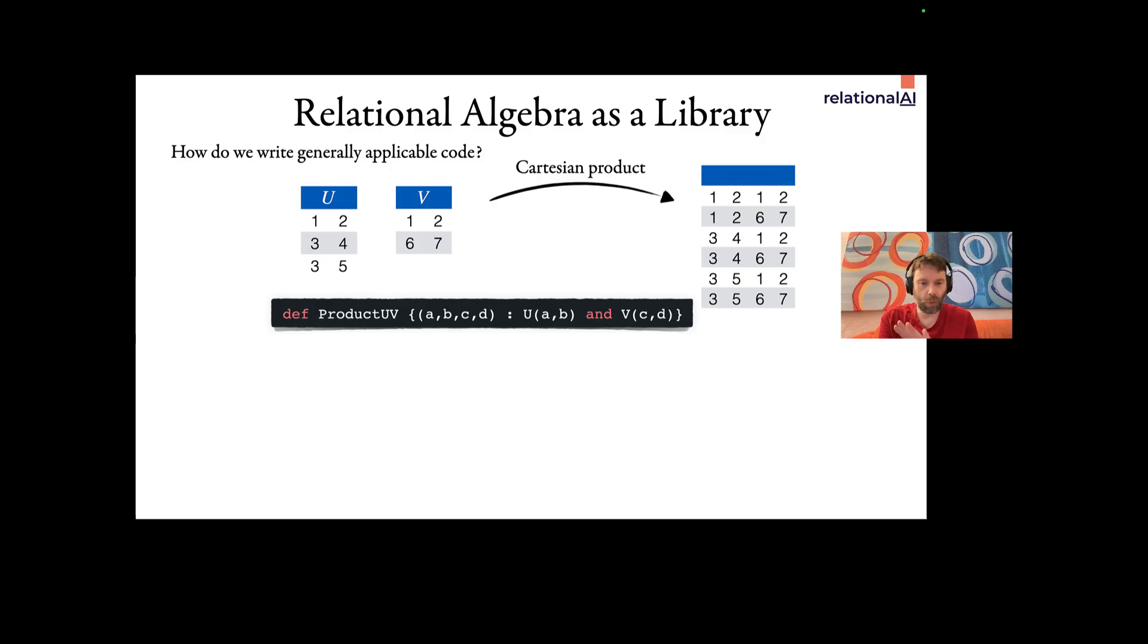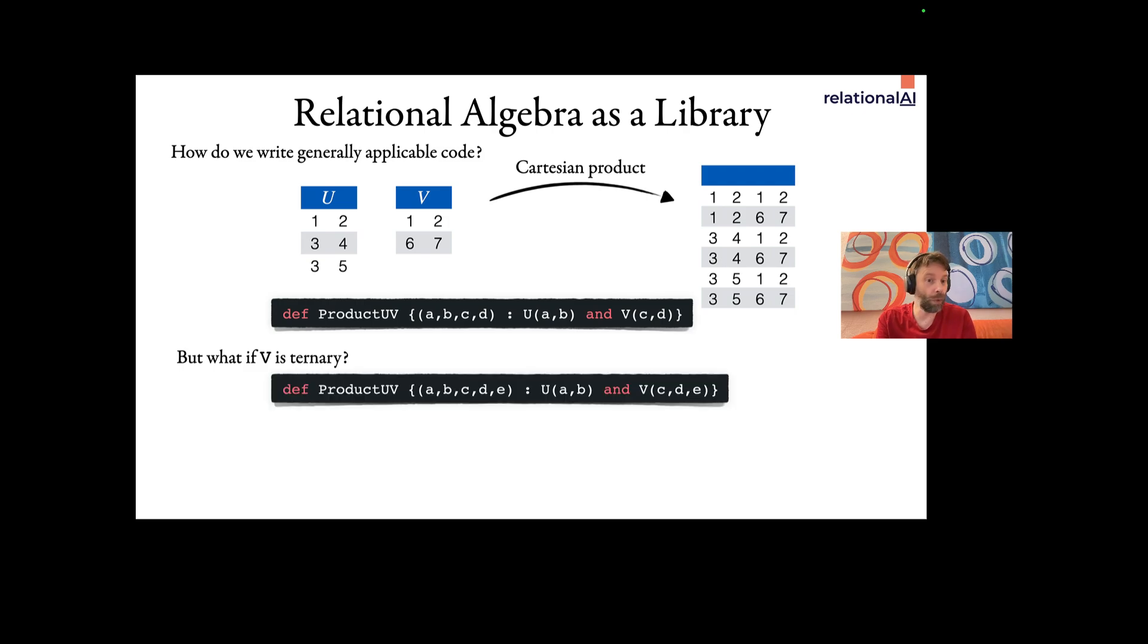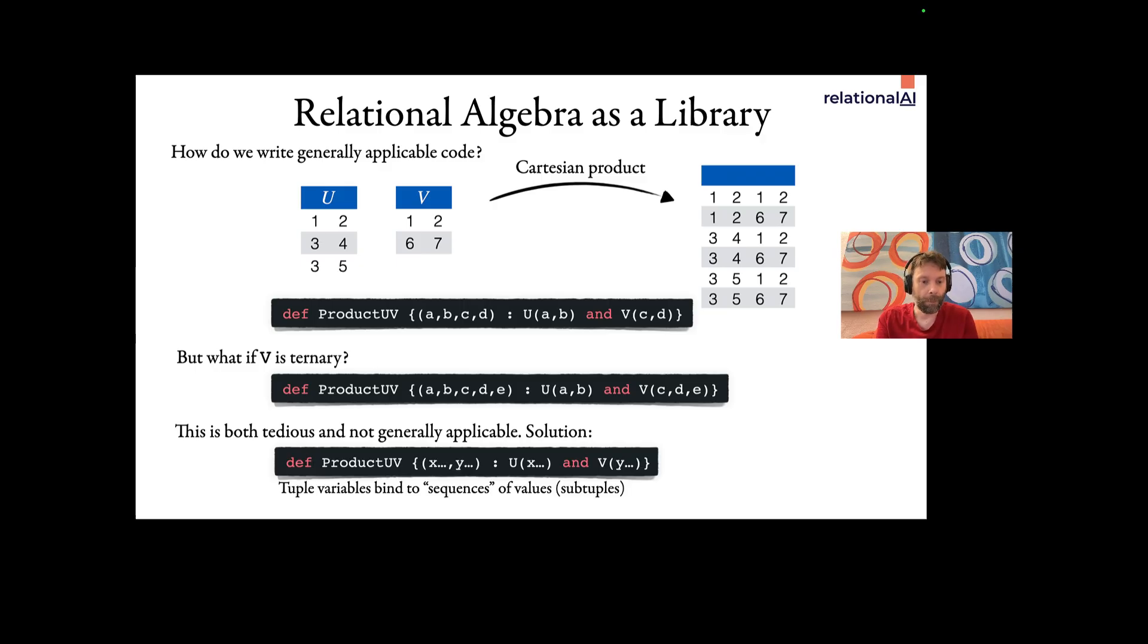But this code is not what you would really want, right? This is because this code is not generally applicable. If v would be ternary, you would have to change the code to this, right? It would have to look like this. And this is why rel has so-called tuple variables, to make this code work, no matter what are the arities of u and v, right? And here we are saying that the product of u and v is the set of tuples x, y, now with dots, such that x is a tuple in u and y is a tuple in v.